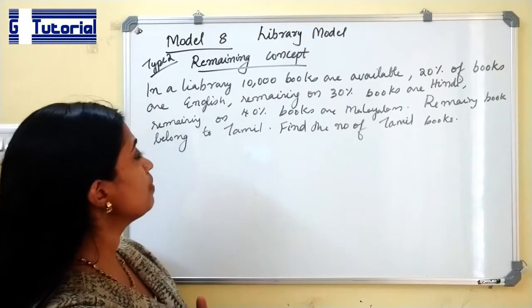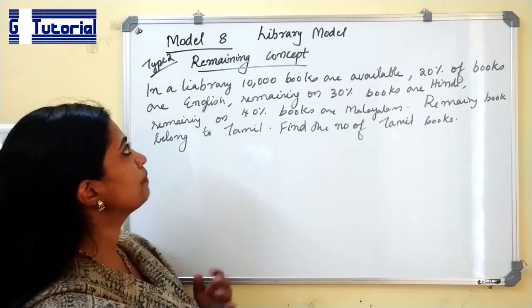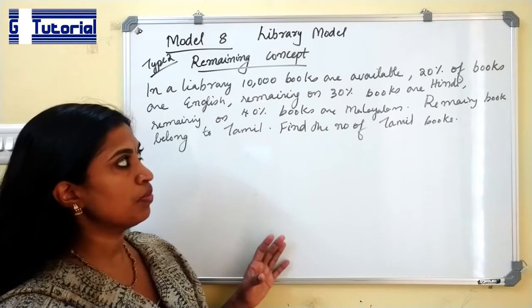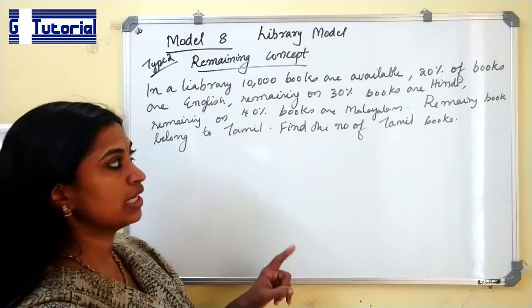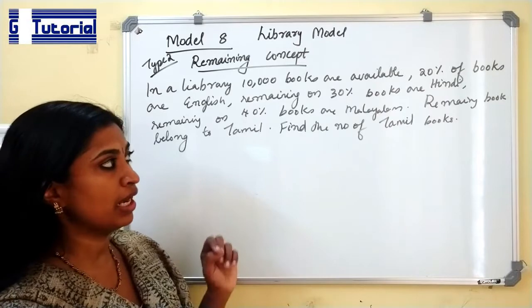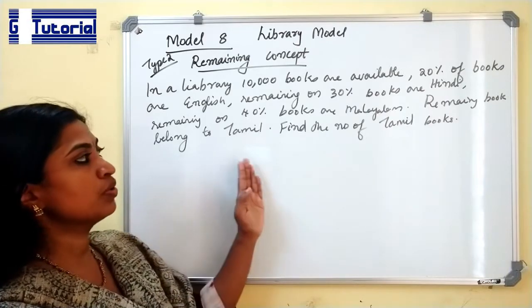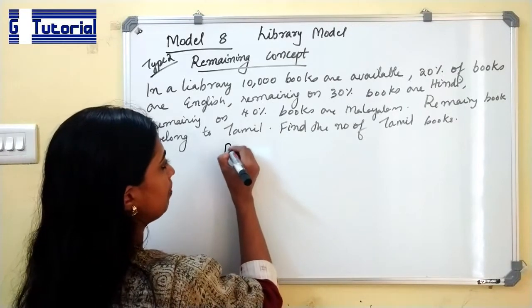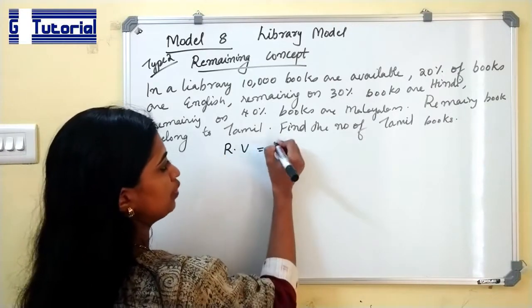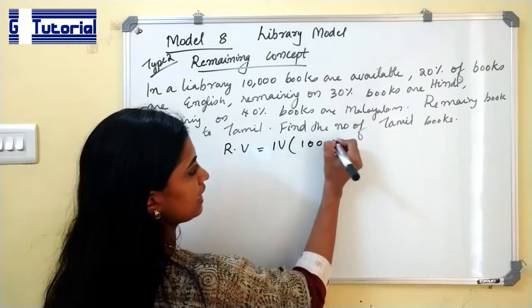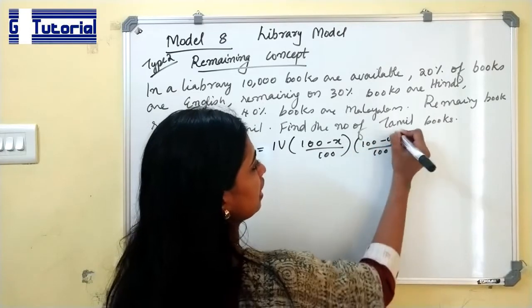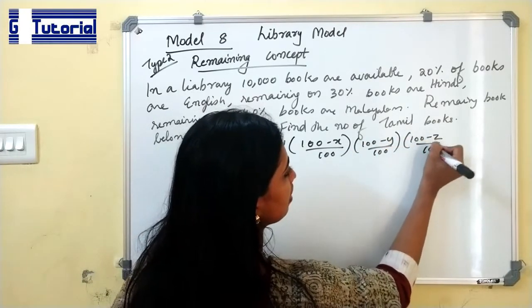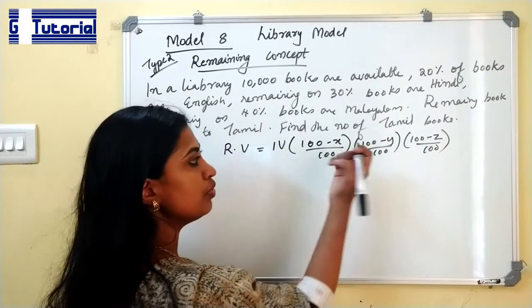This is the second type problem — the remaining concept problem. In a library, there are 10,000 books. 20% of the books are in English. From the remaining, 30% of books are in Hindi. From the remaining, 40% of books are in Malayalam. The remaining books belong to Tamil. Find the number of Tamil books. The formula for this kind of problem is: remaining value equals initial value into (100 minus x)/100 into (100 minus y)/100 into (100 minus z)/100. If there are more cases, continue accordingly.